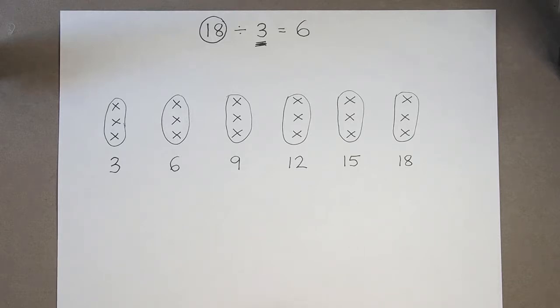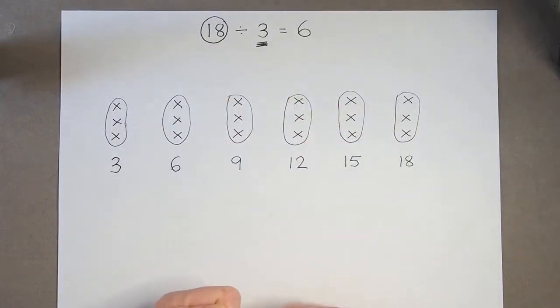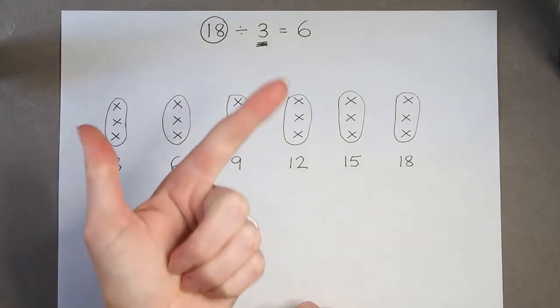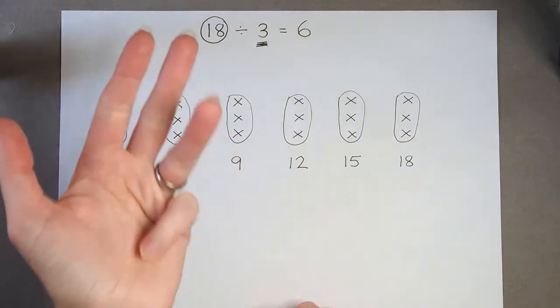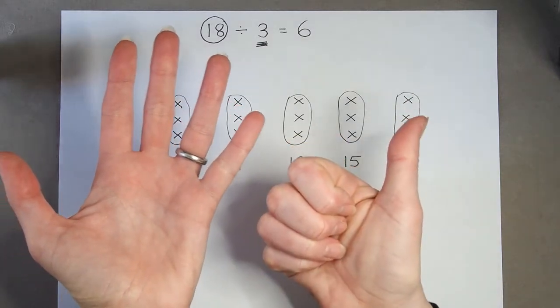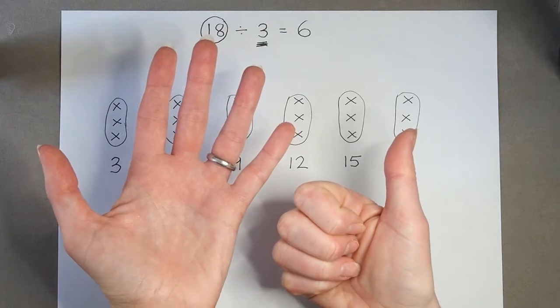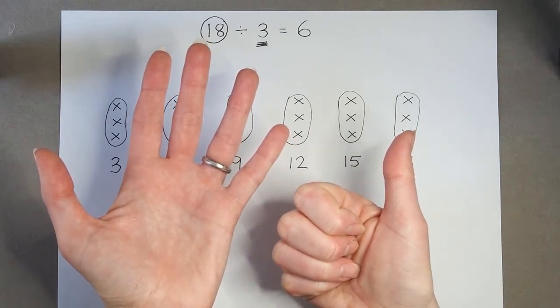If we can count confidently, we can do that using our fingers. So I'm going to count in 3's until I get to 18. 3, 6, 9, 12, 15, 18. So I counted 6 lots of 3. And that was my answer.